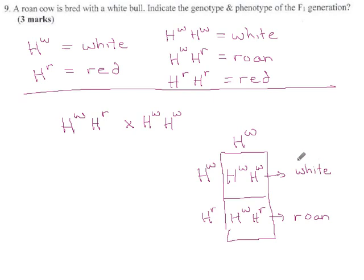So genotypes and phenotypes, you could say it's 50% HWHW to 50% HWHR. Or for phenotypes, you can say 50% white to 50% roan. Or if you don't feel like doing percentages, you can just say the ratio, the phenotype ratio is one white to one roan.